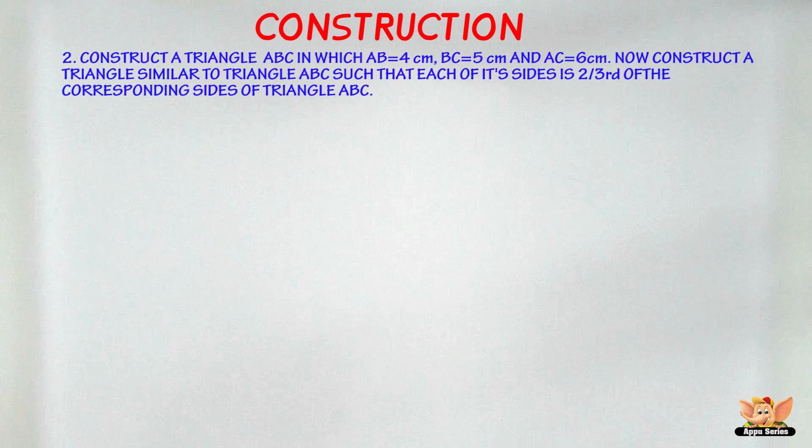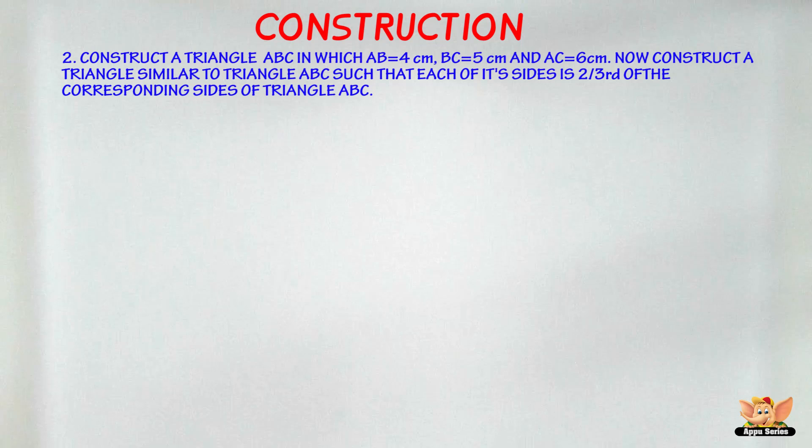Now we've got a question here. Construct a triangle ABC in which AB equals 4 cm, BC equals 5 cm, and AC equals 6 cm. Now construct a triangle similar to triangle ABC such that each of its sides is 2/3 of the corresponding sides of triangle ABC.